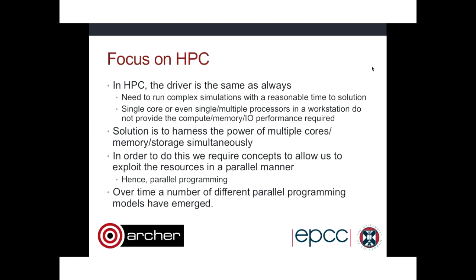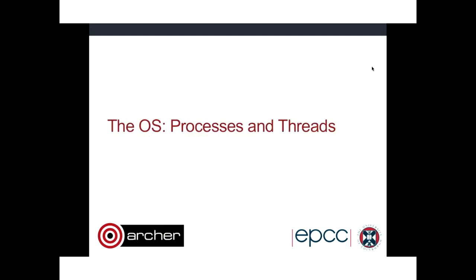There are a number of different parallel programming models. This tutorial provides a high-level overview of the two most popular parallel programming models in use at the moment — namely shared memory and message passing programming. To understand the differences between these two models, you need to know a bit about the underlying way in which the operating system handles allocation of resources on the hardware. I've titled this section as Processes and Threads.